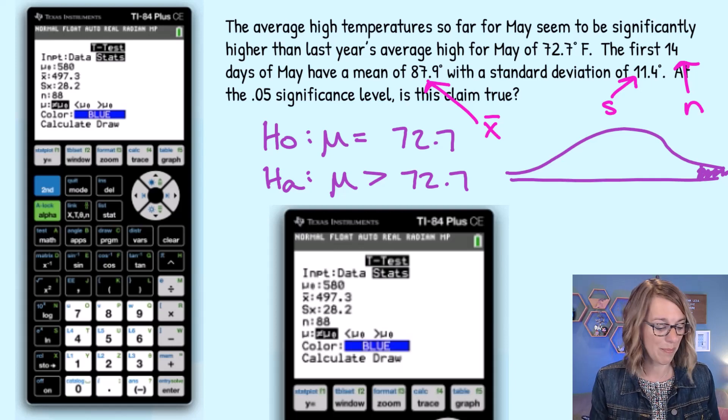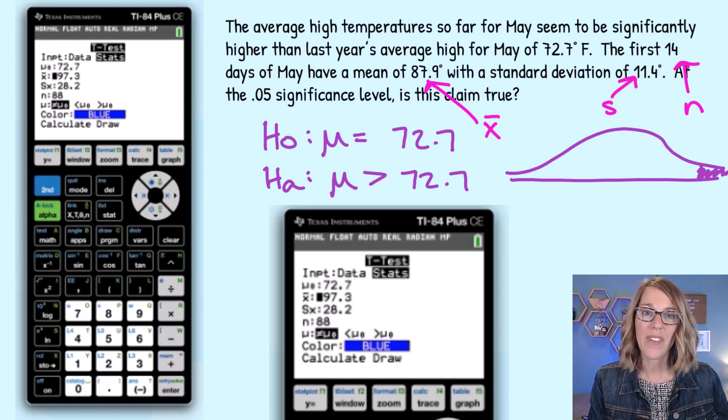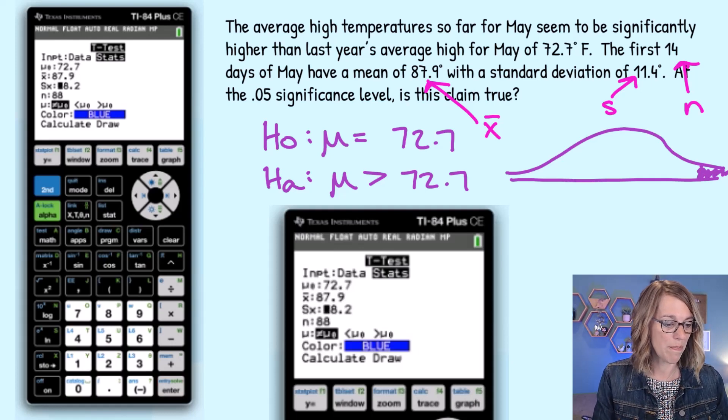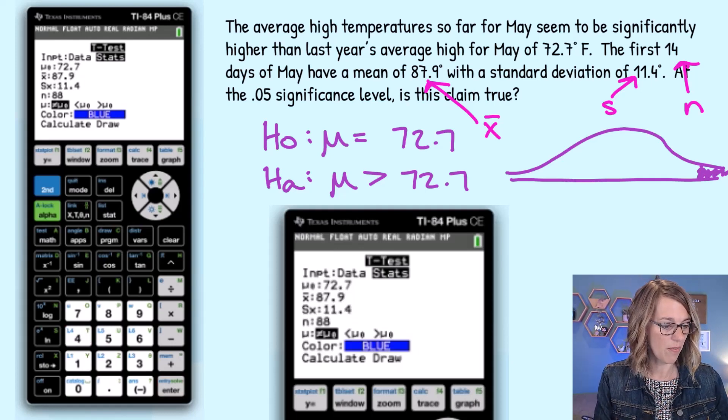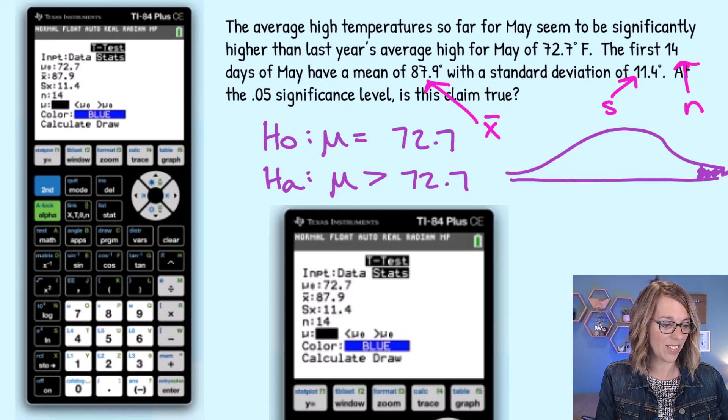Our hypothesized mean is first, that's going to be 72.7 and then we've got our sample mean x̄ that was 87.9 so far for May. That sample standard deviation is 11.4 and our sample size we've got the first 14 days so far.